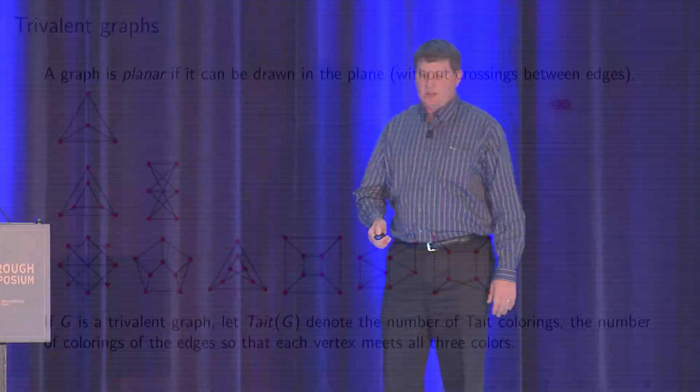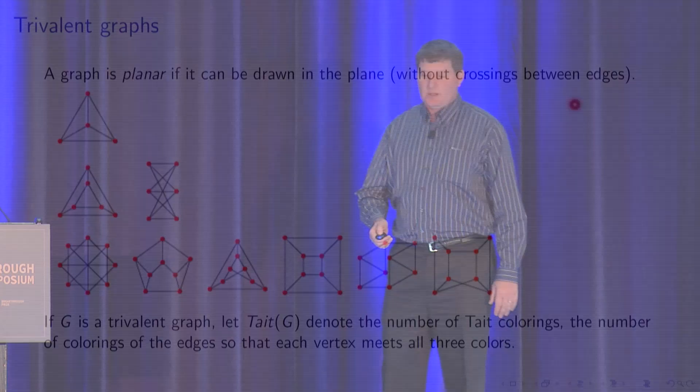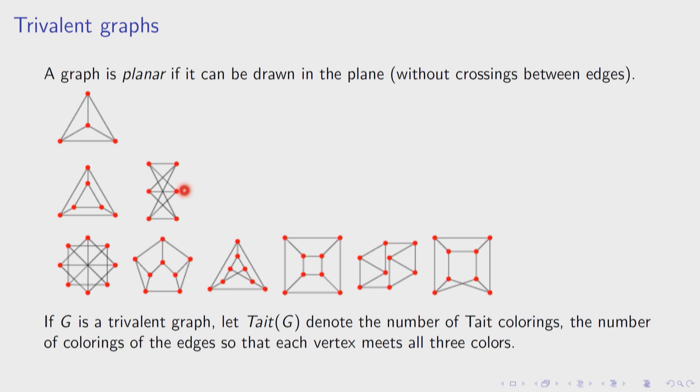A graph is planar if it can be drawn in the plane. We see some planar graphs here. The K₃,₃ graph is non-planar. The Möbius ladder is also non-planar — it might not be obvious whether some graphs can be embedded in the plane or not.